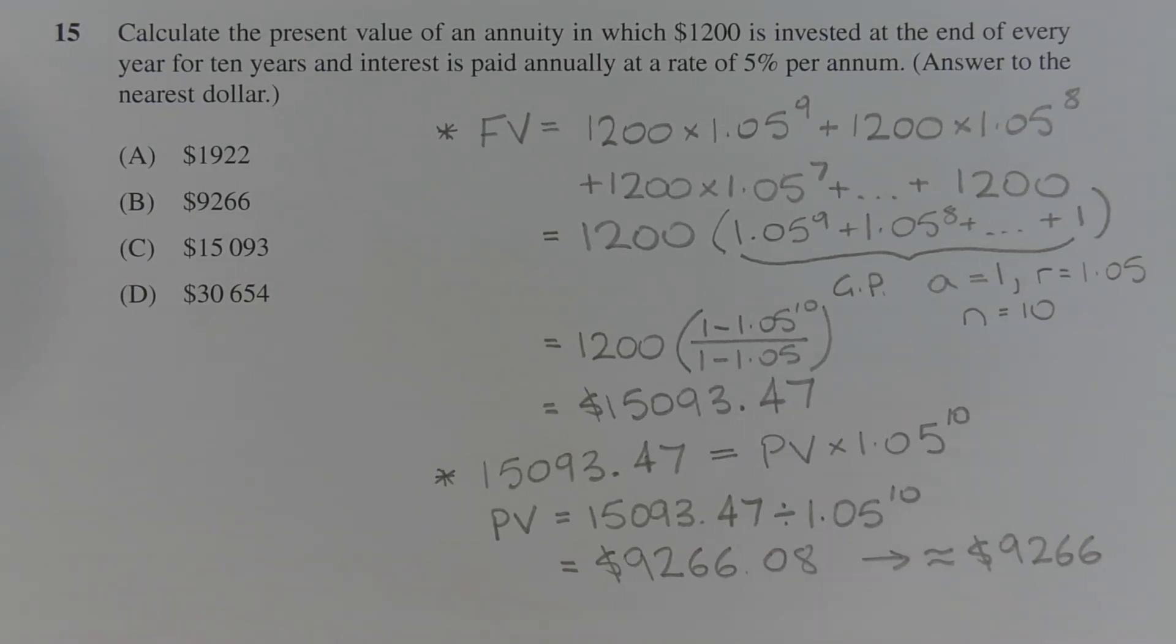The next step is to determine the present value, and we're just going to use the compound interest formula. So the future value, $15,093.47 is equal to the present value times 1.05 to the power of 10. Rearranging this formula to make the present value PV the subject,